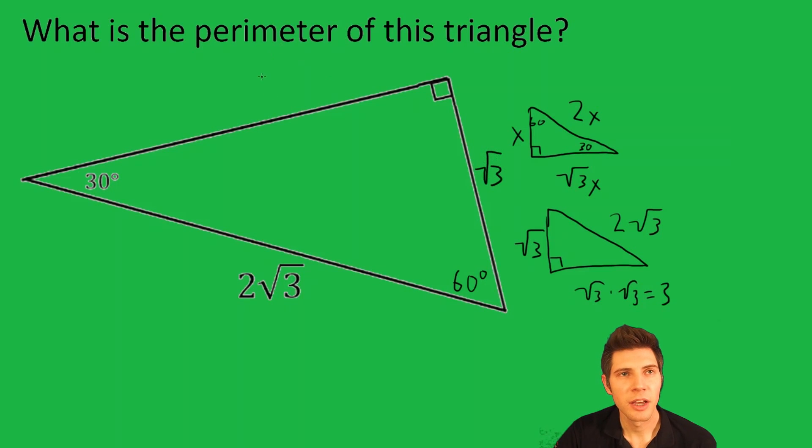And over here is 3. And now we can just add this up: 3 plus 2√3 plus √3. And 2√3 plus √3 is 3√3, because there's an implied one in front. 2 plus 1 is 3.